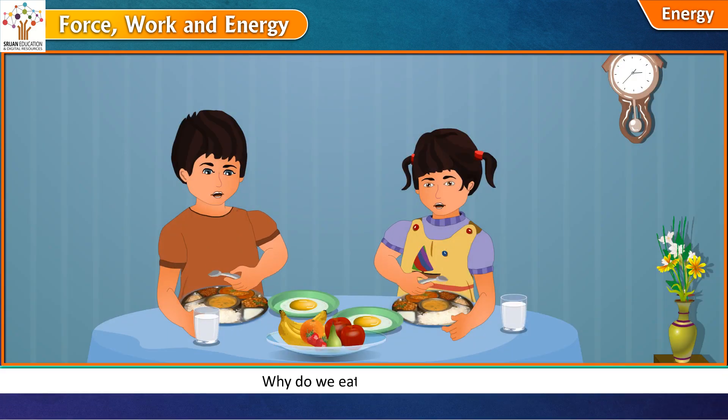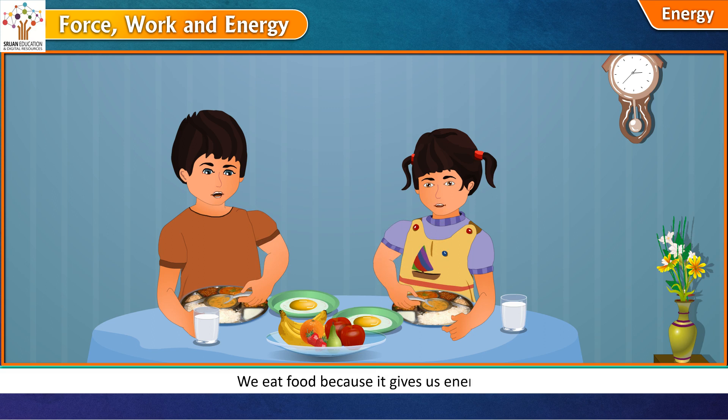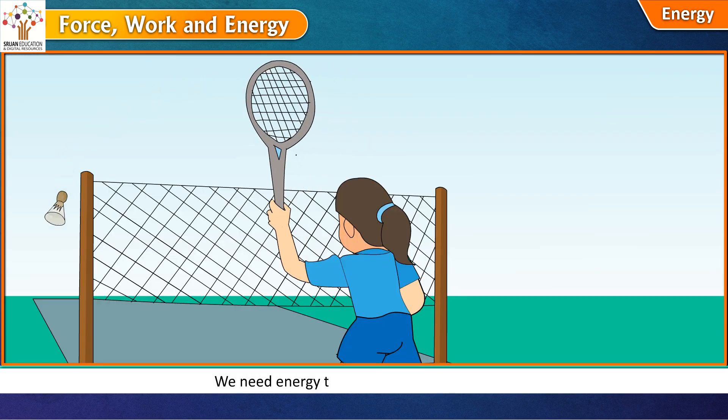Energy. Why do we eat food every day? We eat food because it gives us energy. We need energy to do different types of work. Energy is the ability to do work. It is needed to exert force to get the work done. Can you list some daily activities for which you need energy?